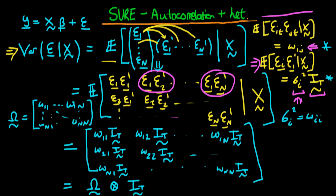Using the Kronecker product, we can write this much more neatly as Ω ⊗ I_T, where Ω is the matrix with elements ω₁₁ through ω₁ₙ down to ω_{n1} through ω_{nn}. The Kronecker product takes every element of Ω and multiplies it by the second matrix I_T, making the full matrix nt by nt in dimensions. Because this matrix is not diagonal, we shouldn't be using OLS for the system as a whole — we should be using GLS, which corrects for the presence of serial correlation and heteroscedasticity and produces more efficient parameter estimates than OLS.